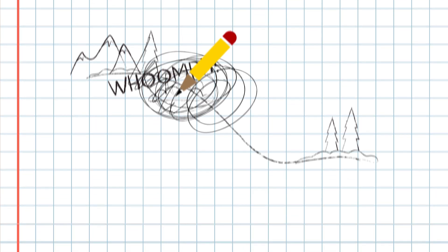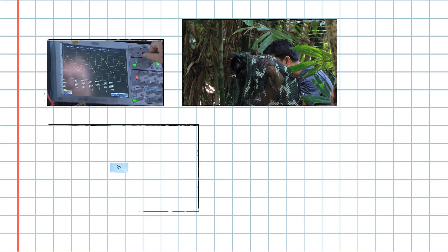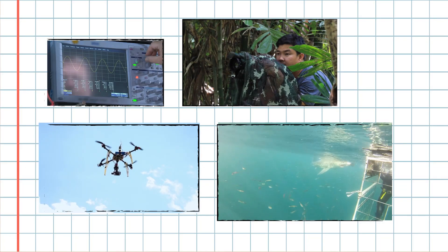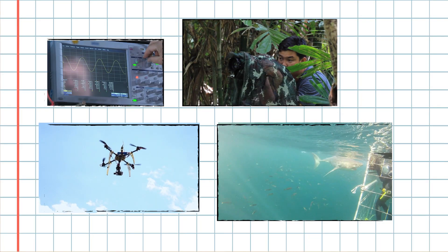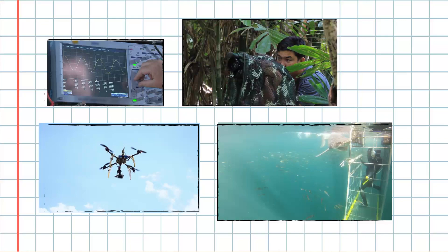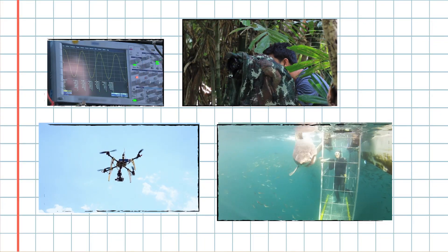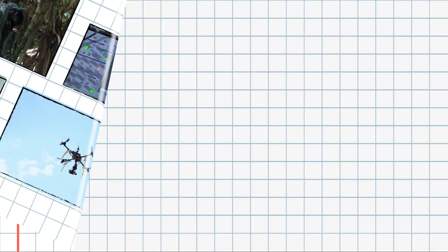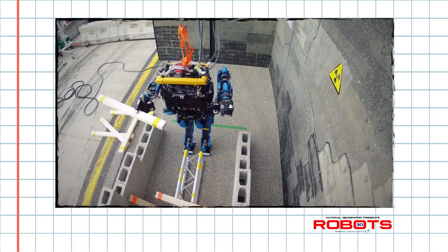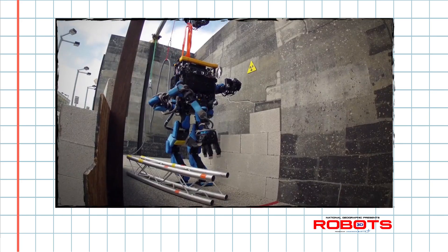You see, engineering is problem-solving no matter how big or small the challenge. At National Geographic, our explorers face lots of challenges and have to engineer some pretty creative solutions. Some of these creative solutions use the same technology that robots use.